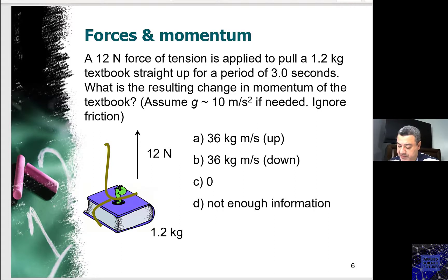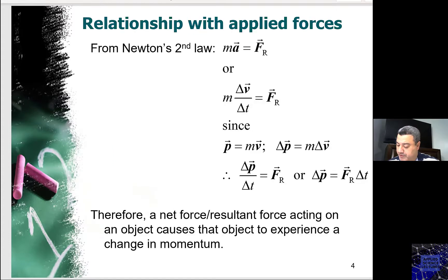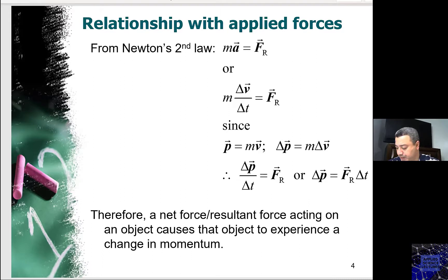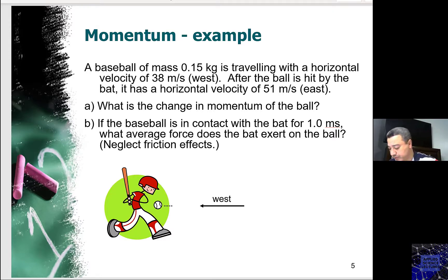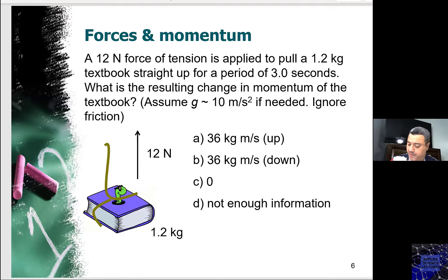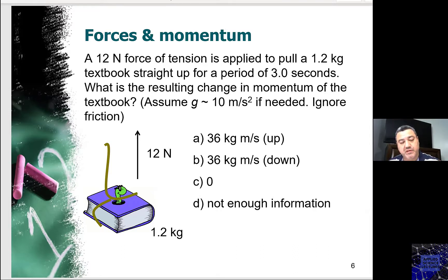We started the momentum, and we have seen that momentum is basically a property of an object that has a velocity. Any force applied on this object is going to result in a change in the momentum. We saw an example where we calculated the difference of momentum due to the force applied by the bat on the baseball, and we have seen how that force resulted in a change in momentum. We'll continue today with a few examples and an introduction to a new method of solving collisions specifically.